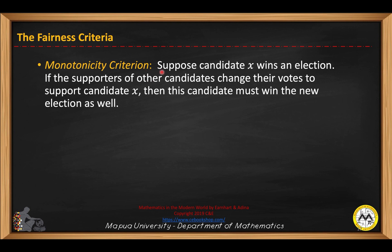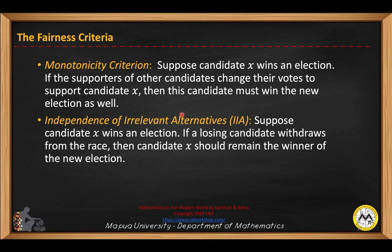The monotonicity criterion: suppose candidate X wins an election. If the supporters of another candidate change their votes to support candidate X, then candidate X must win the new election as well. The independence of irrelevant alternatives, or IIA: suppose candidate X wins an election. If a losing candidate withdraws from the race, then candidate X should remain the winner of the new election.